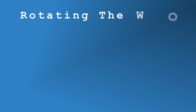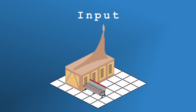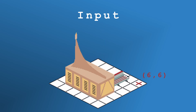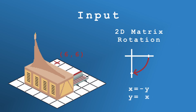Rotating the world is a little bit trickier, as not only do you have to consider rendering, but also player input. When a player clicks on the grid, the existing code knows what position has been clicked. However, when the world has been rotated, that's no longer valid. To fix this, all player input needs to be rotated to reflect the current viewing angle. Again, this is fairly simple with 2D matrix rotation, even though it broke a few assumptions the original code made. Luckily, that was all fairly easy to resolve.